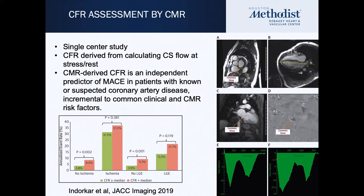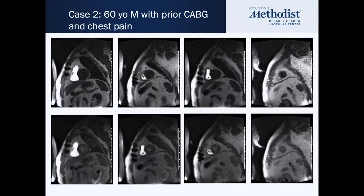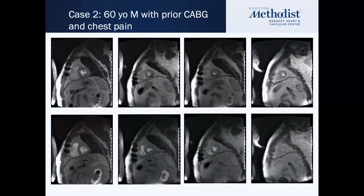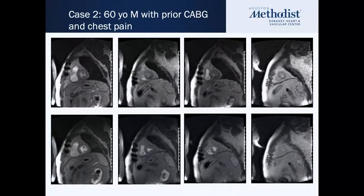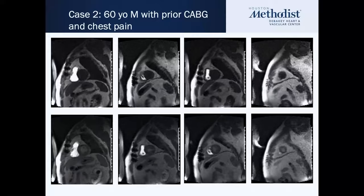In terms of assessing coronary flow reserve, one method using MRI is by deriving coronary sinus flow at stress versus rest. This was shown to be a predictor of major adverse cardiovascular events in patients with known or suspected coronary disease. We'll talk more about quantitative perfusion mapping for diagnosing coronary microvascular disease.